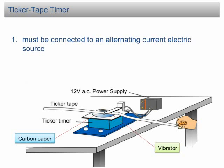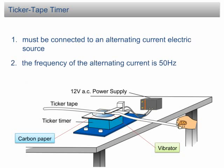If it is connected to a direct current, it won't work. Second, in most countries, including Malaysia, the frequency of the alternating current is 50 Hz. This makes the ticker tape timer vibrate 50 times per second and makes 50 dots on the ticker tape in one second.